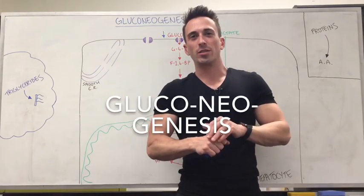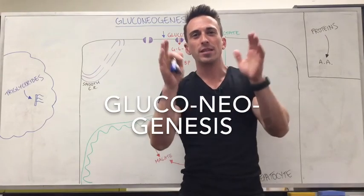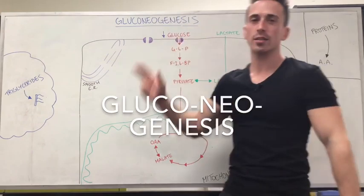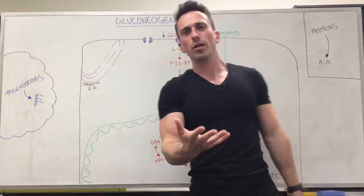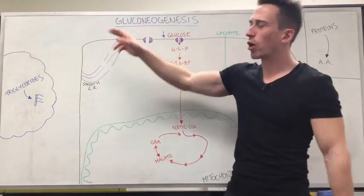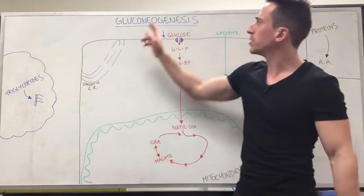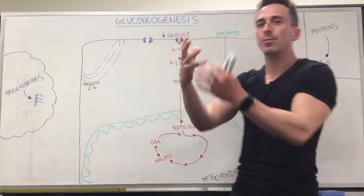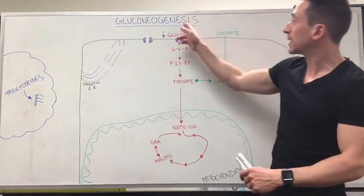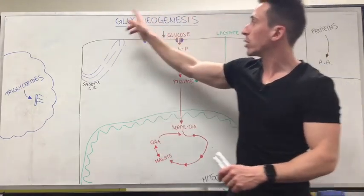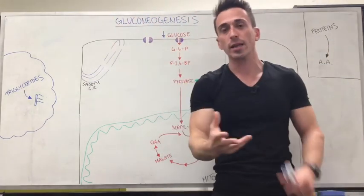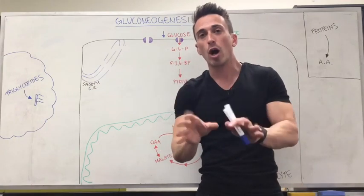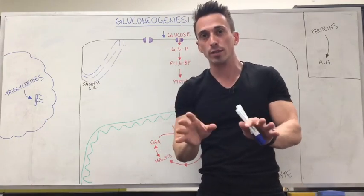Hi everybody, Dr. Mike here. Let's talk about the amazing process of gluconeogenesis. What's gluconeogenesis? Well let's break the word up. Glucone means glucose, neo means new, genesis means the beginning of — reading it backwards: the beginning of new glucose. Basically this is producing glucose from non-carbohydrate based sources.